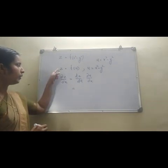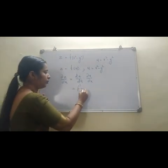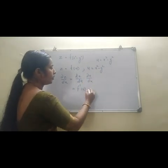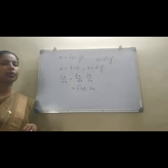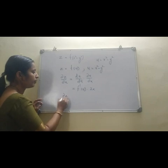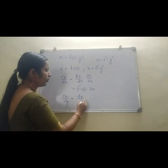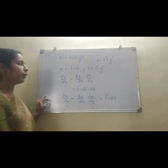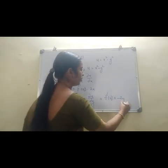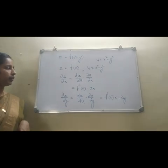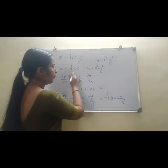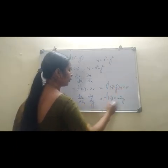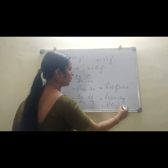dz/du = F'(u), since F contains a single variable so its derivative is the ordinary derivative. dou u/dou x = 2x. So dou z by dou x = F'(u) · 2x. Similarly, dou z by dou y = F'(u) · (dou u/dou y) = F'(u) · (−2y). Replacing the substitution back: dou z by dou x = F'(x² − y²) · 2x, and dou z by dou y = F'(x² − y²) · (−2y).